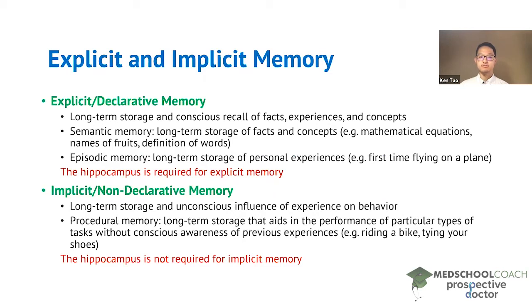Explicit memory includes both semantic memory and episodic memory. Semantic memory refers to the memory of facts and concepts, so your ability to recall mathematical equations, the names of fruits, and the definitions of words.